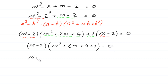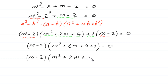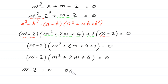Next, m minus 2 times m squared plus 2m, and 4 plus 1 becomes plus 5, is equal to 0. From here, either m minus 2 is equal to 0, or m squared plus 2m plus 5 is equal to 0.